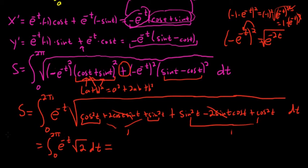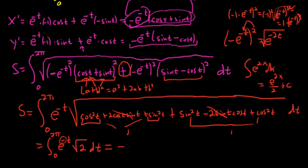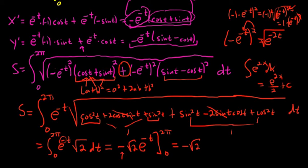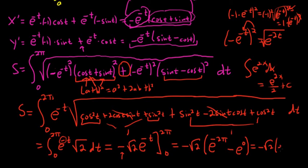Now we just have to integrate this. When you integrate e to the negative t, you just divide by the negative 1, so you get negative √2 · e to the negative t, evaluated from 0 to 2π. Plugging in 2π first: negative √2 times (e to the negative 2π minus e to the 0), which gives negative √2 times (e to the negative 2π minus 1). That is the arc length — the final answer.